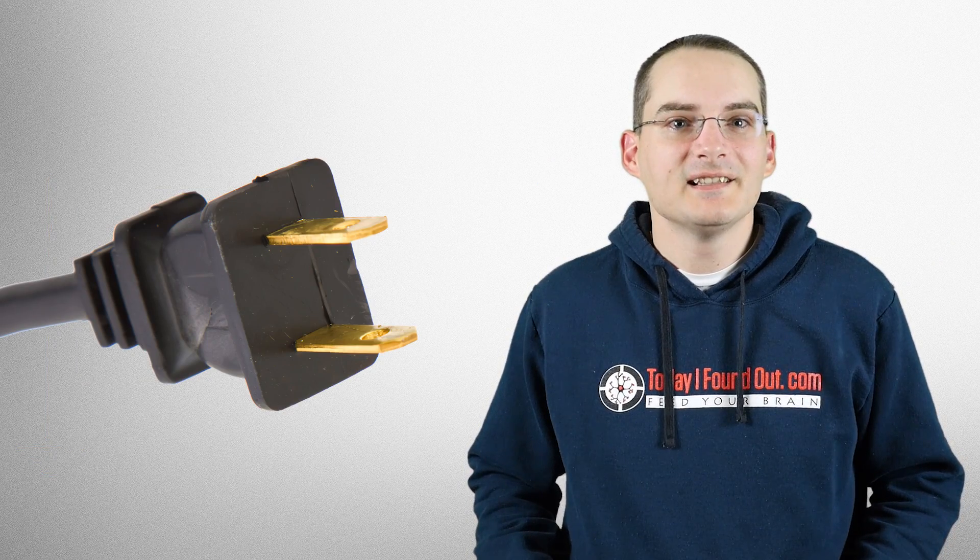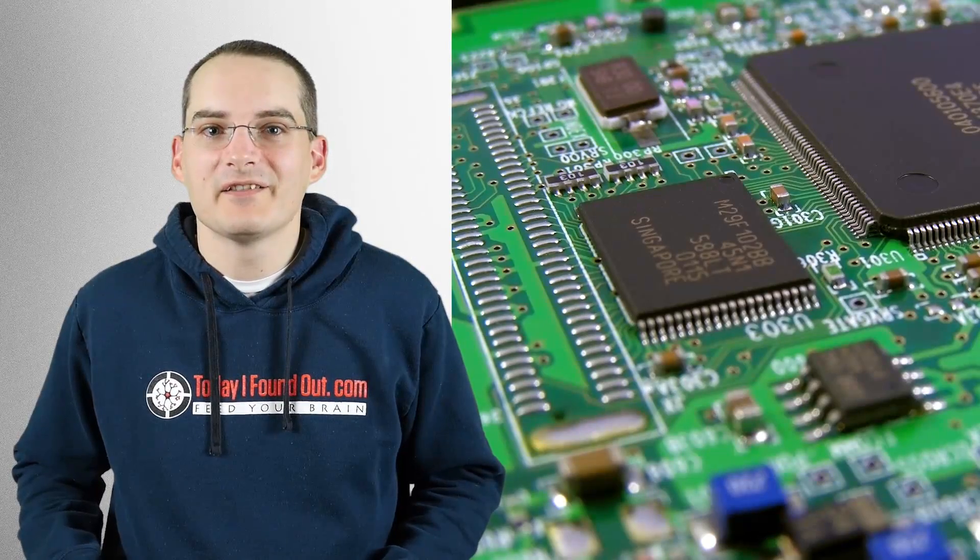So what about the devices that lack the third ground prong? How is that safe? They usually have at least two layers of insulation between the conductive components of the device and any part of the device you can touch. To achieve this cheaply, the outer casing of these devices are often made entirely of plastic or some other non-conductive material.